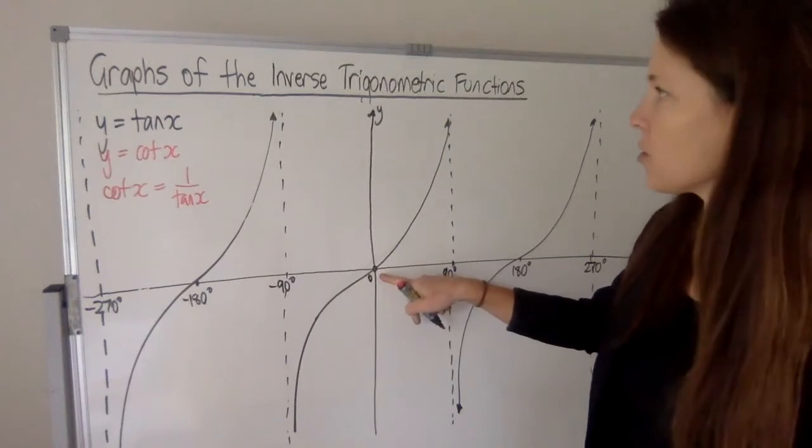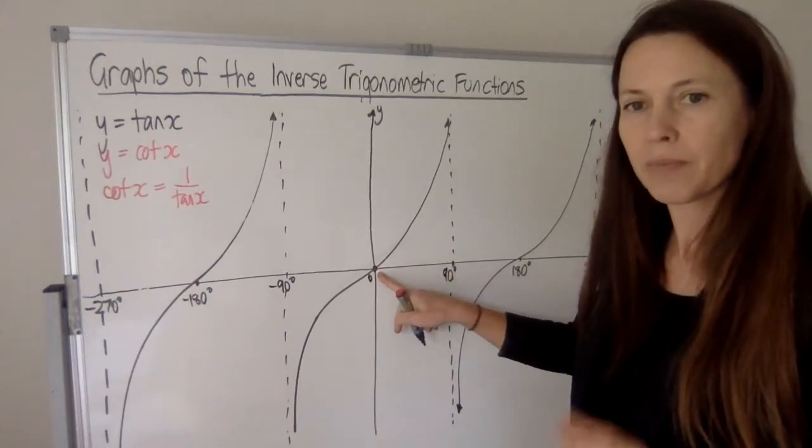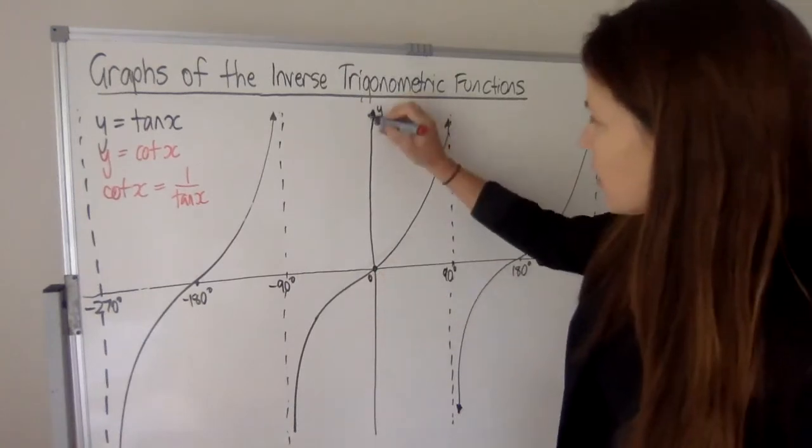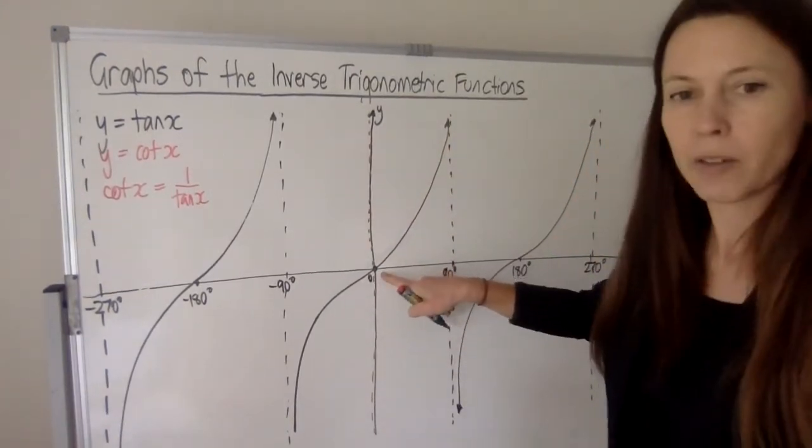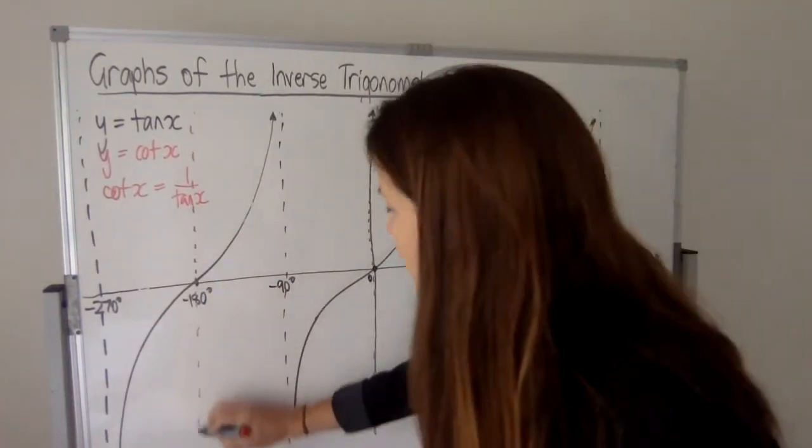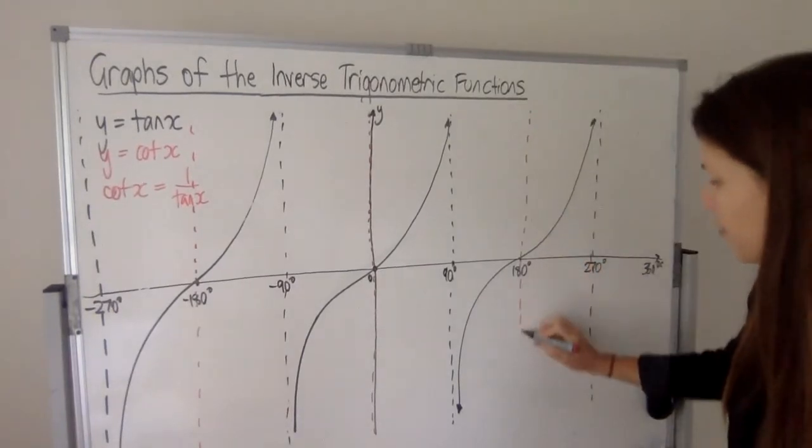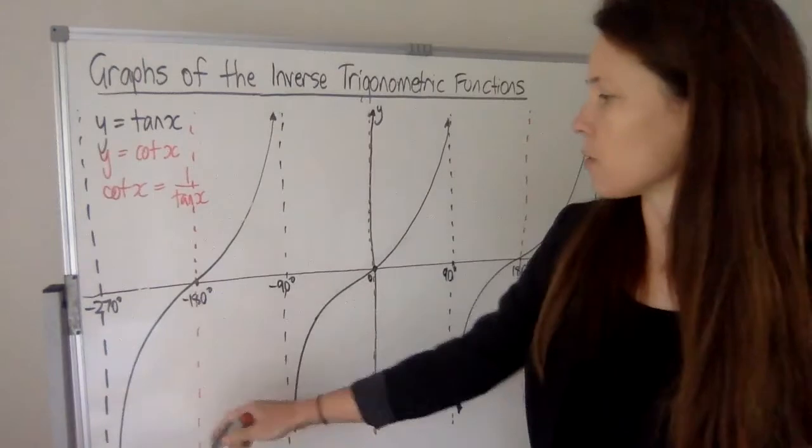Now, similar to when we found the other inverse trig functions, if you do 1 divided by 0, it's undefined. So we're going to get asymptotes for cot x anywhere that we're going through the origin here. So that means out here at minus 180 and 180. And we're going to have that period of repeating 180 degrees. So every 180 is going to be an asymptote.